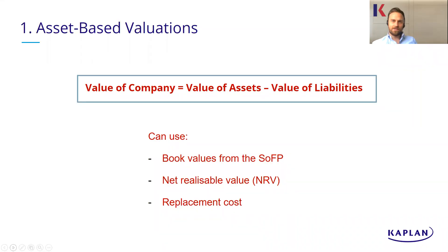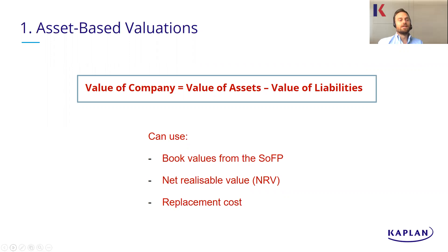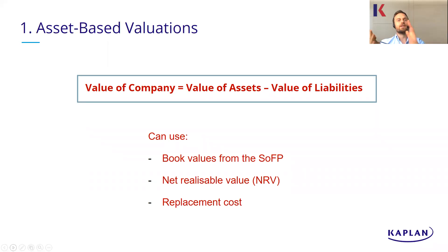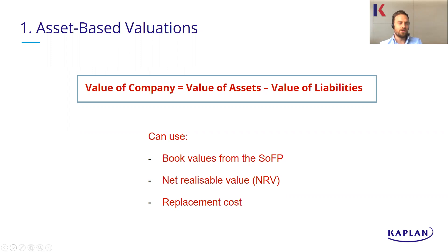Let's start with asset-based valuations. The value of a company, if we're just valuing it based on its assets, is just its assets less its liabilities. It's a really straightforward way to value a company — you just take their assets, deduct the liabilities, and that effectively gives you the value of the company's equity. There are a few options as to what we can use for our assets. We could use our book values from the statement of financial position, so just looking at what they are on the financial statements.